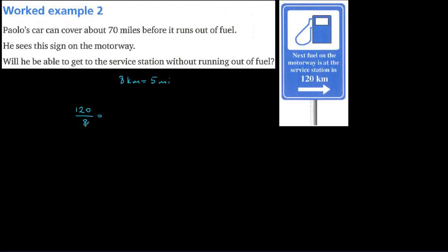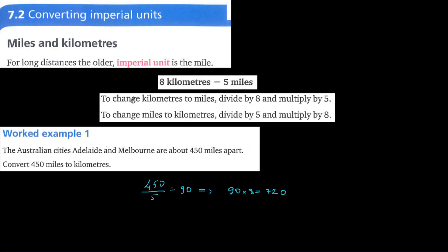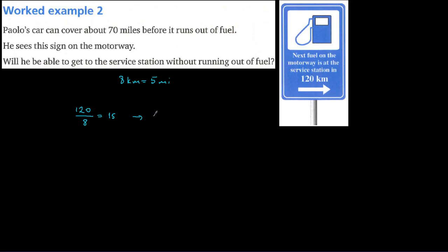Dividing 120 by 8 gives 15, then multiplying by 5 gives 75 miles. So 120 kilometers equals 75 miles. Since Paulo's car can only go a maximum of 70 miles and the service station is 75 miles away, he cannot reach it without extra fuel.